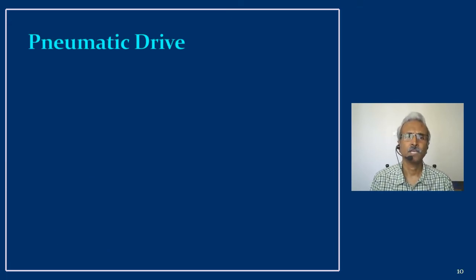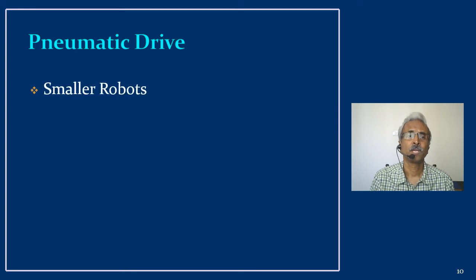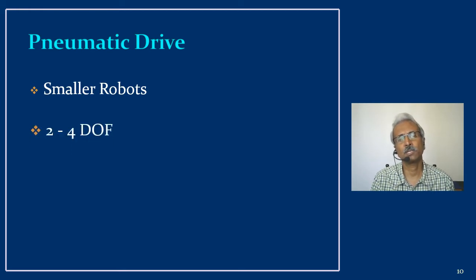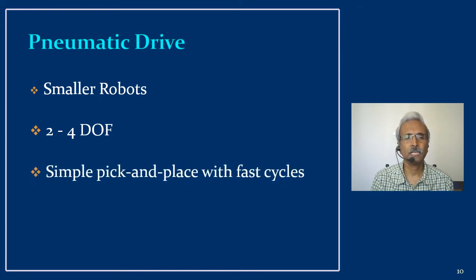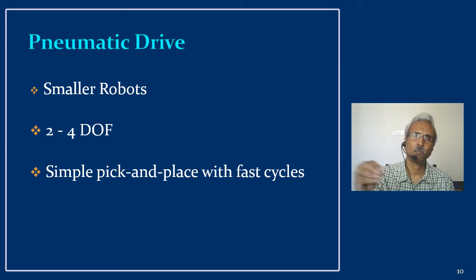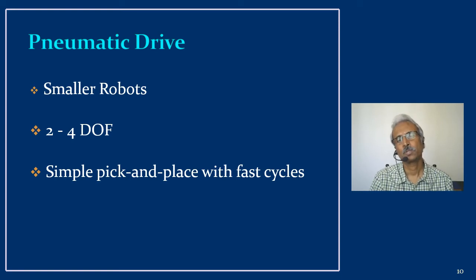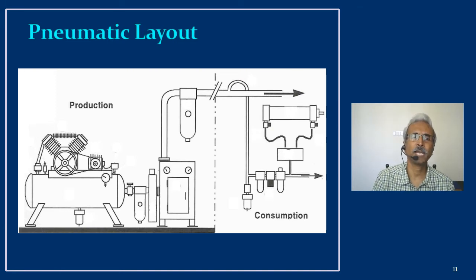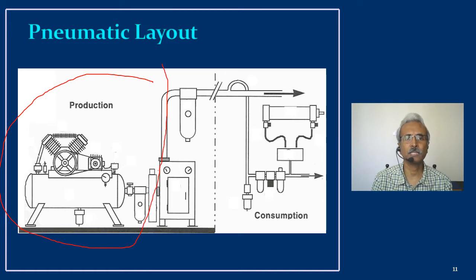Next is pneumatic drive, which uses compressed air for various operations. It is mainly used for smaller robots with two to four degrees of freedom. It is suited for simple pick and place operations with fast cycles — moving components from one conveyor to another, or from a conveyor onto packaging or a pallet. Fast cycle times are possible with pneumatic drives.